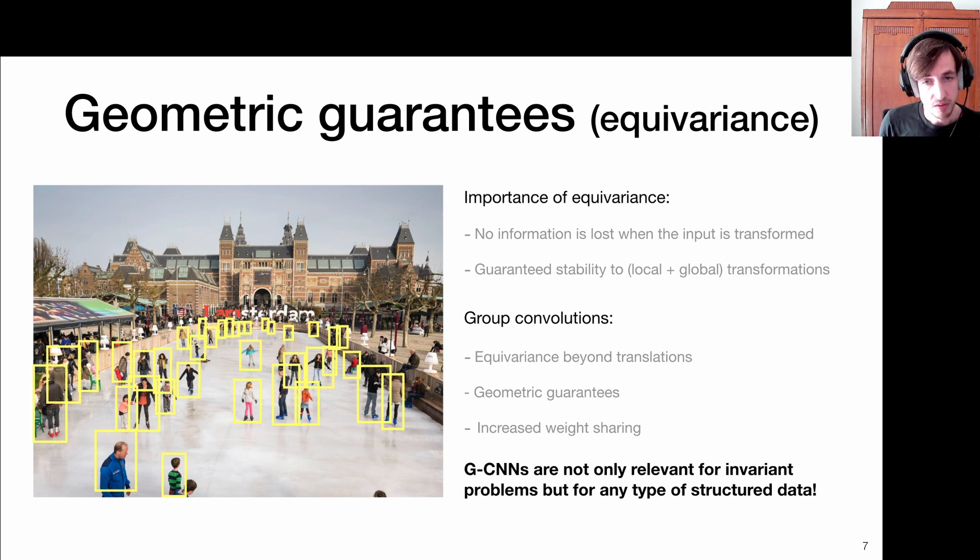Equivariance is important because it guarantees that no information is lost when the input is transformed. It just appears somewhere else in the neural network, in the feature maps. This notion of equivariance allows for weight sharing. What we're going to do with group convolutions is build in this equivariance beyond just translations. This allows us to provide geometric guarantees and increased weight sharing, or being more efficient in our representation learning.